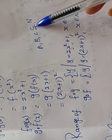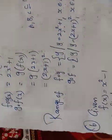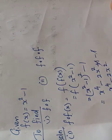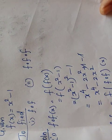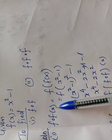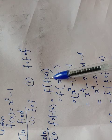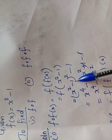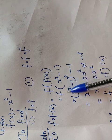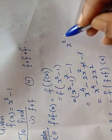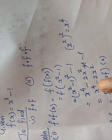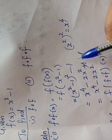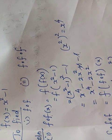Question number 6: given f of x equal to x squared minus 1, find f composite f and f composite f composite f. For f composite f of x, that is f of f of x. f of x is x squared minus 1, so substitute x squared minus 1 into f: (x squared minus 1) whole squared minus 1. Expanding using (a minus b) squared: x power 4 minus 2x squared plus 1 minus 1, so plus 1 and minus 1 cancel, giving x power 4 minus 2x squared.